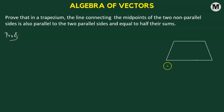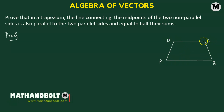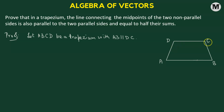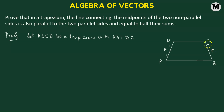Let's say we have a trapezium ABCD, where AB is parallel to DC. We consider the two non-parallel sides: AD and BC. Let E be a point on AD such that E bisects AD, meaning E divides AD in the ratio 1:1. Similarly, on the other side BC, we consider a point F that bisects BC, dividing it in the ratio 1:1.